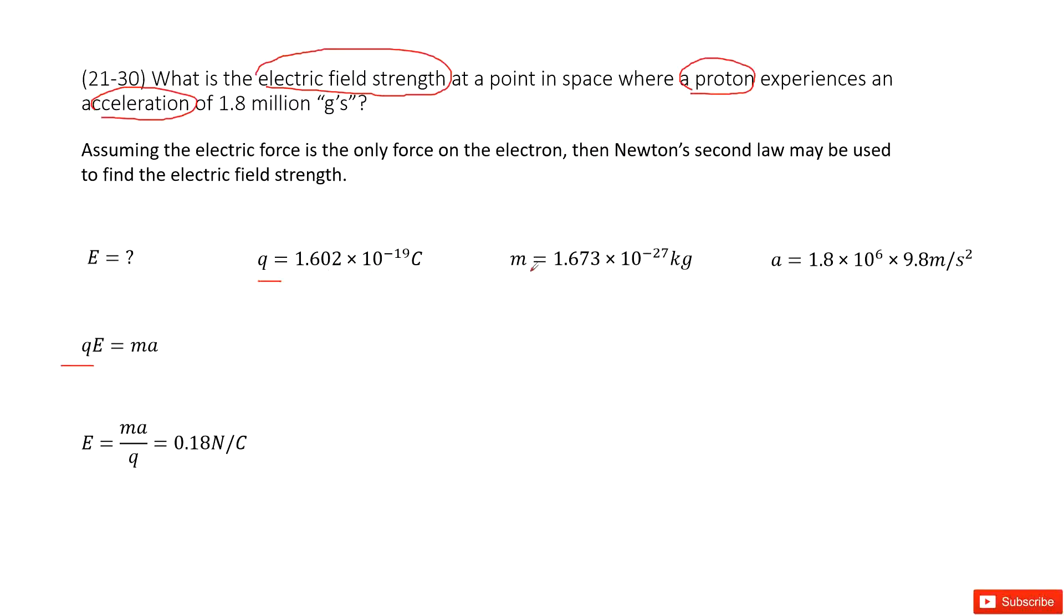So you can write it there. And the mass for the proton, you can find it there. And then acceleration is given. So this is 1.8 million. So you can write it as 1.8 times 10 power 6. G is acceleration due to gravity. So it's 9.8 meter per second square.